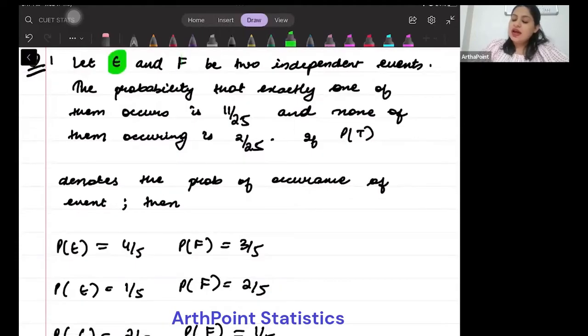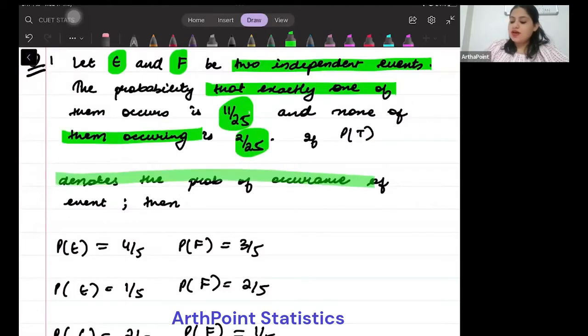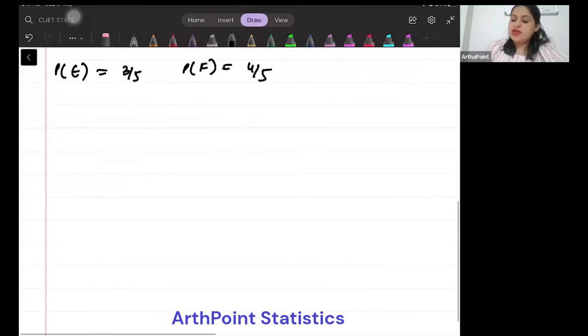Let E and F be two independent events. The probability that exactly one of them occurs is 11 by 25 and none of them occurs is 2 by 25. If Pt denotes probability of occurrence of event T, then what are these values?